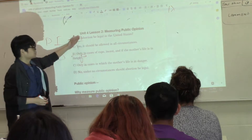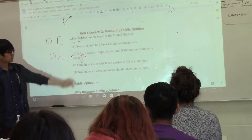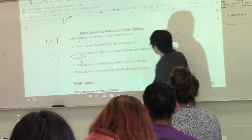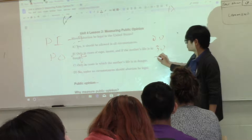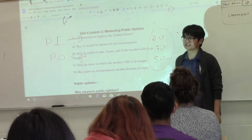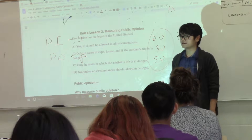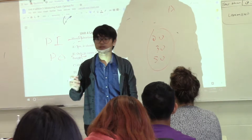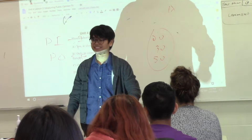For example, if I asked you today, 'Should abortion be legal in the United States?' and let's say 20% of you chose A, 30% chose B, and 50% chose D — I just measured the public opinion of this class. Public opinion belongs to a group of people. An ideology belongs to an individual. Public opinion is a distribution; there is no one public opinion.